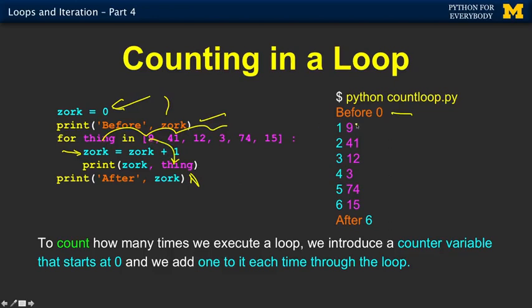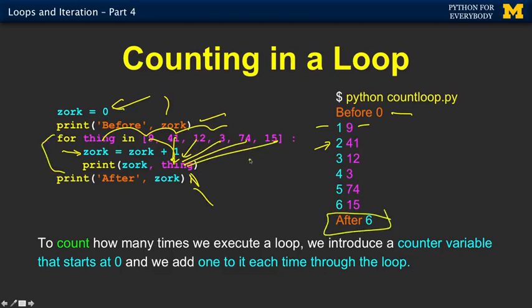So the first time through: nine — that's the first thing we saw. 41, the second. Each time this goes up by one. It doesn't really matter what these things are, but we run this many times. And when we're done, there's the end of the block. When it's all said and done, there were six things. Six is kind of obvious — we could just look at it and know there are six. But this is a way to keep track of the number of times that a loop is executed.